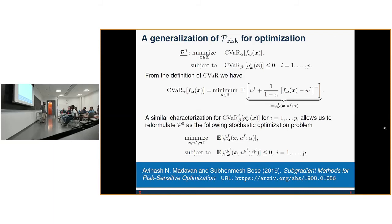Now making use of the definition of CVaR that we had from before, we can express this problem as a stochastic optimization problem purely in expectation. Now why did we spend all this time converting our problem into this nice stochastic optimization form?